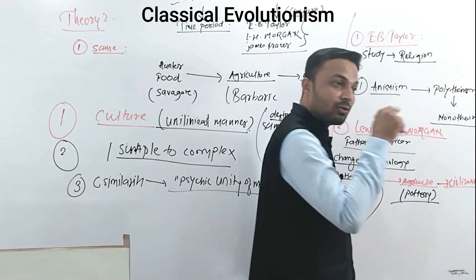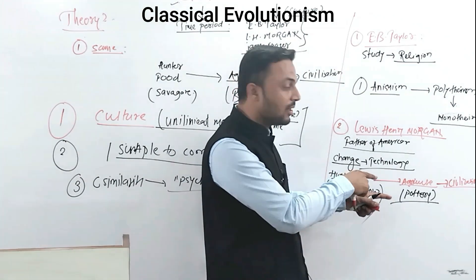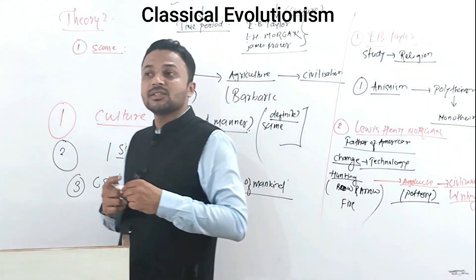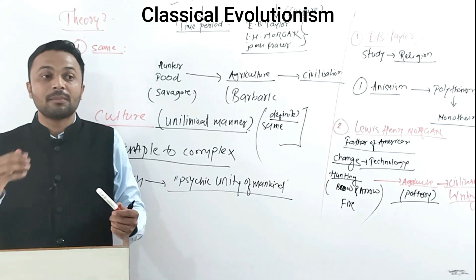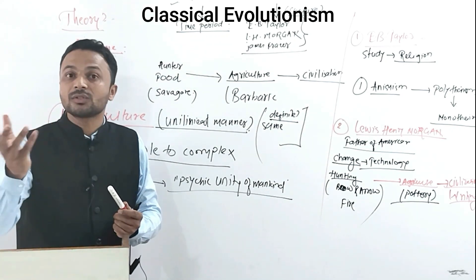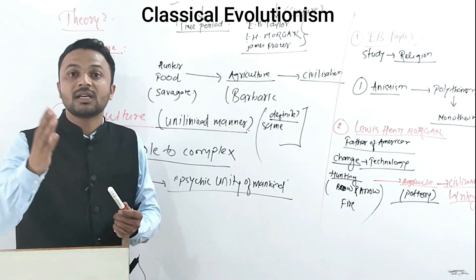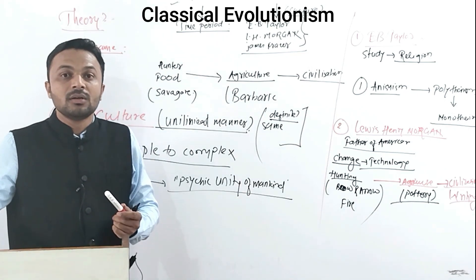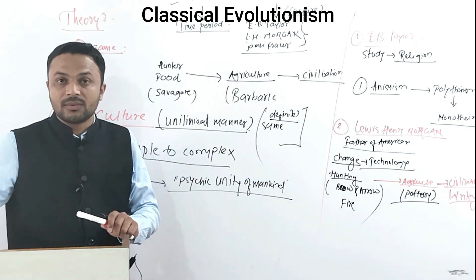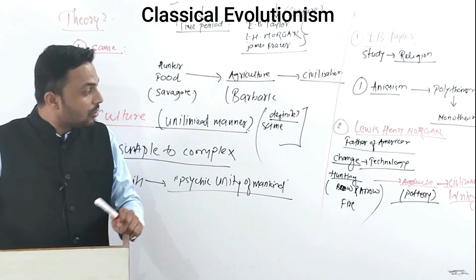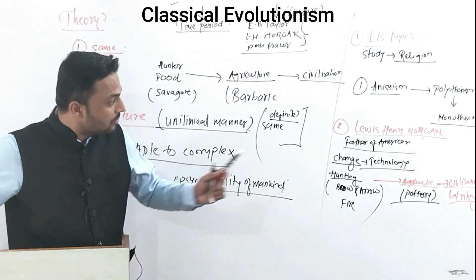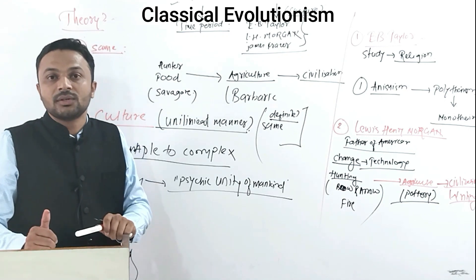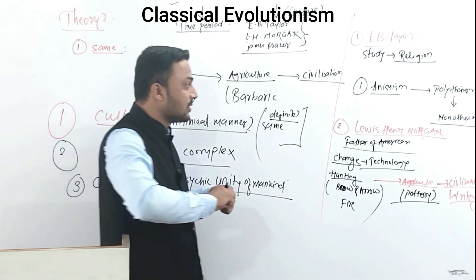From agriculture to the third stage — civilization — humans had all the old technologies plus pottery, and they also learned writing skills. Civilization is the most advanced stage where human beings have knowledge of how to construct houses, roads, and drainage systems; agriculture is established; and there is growth of towns and cities. Lewis Henry Morgan concluded that social change is driven by technological change.